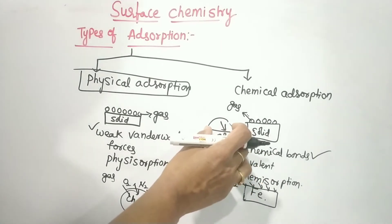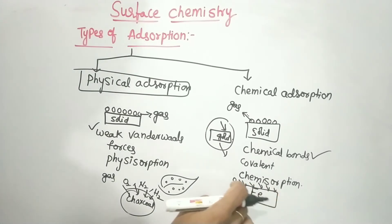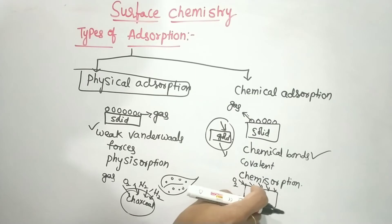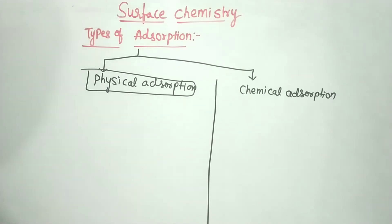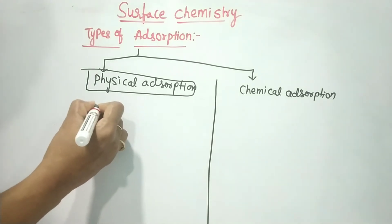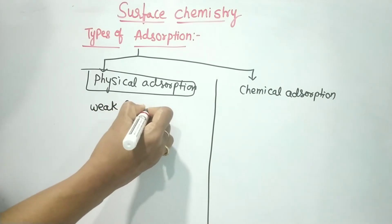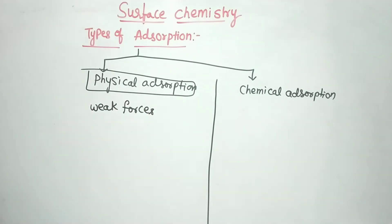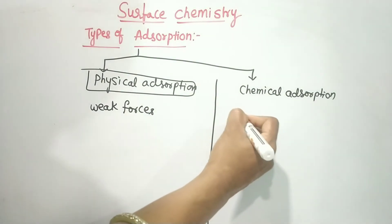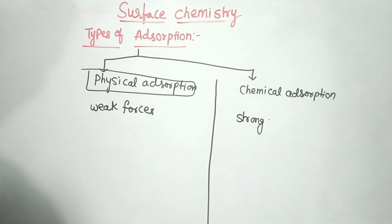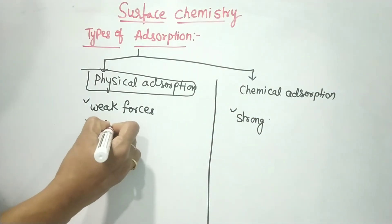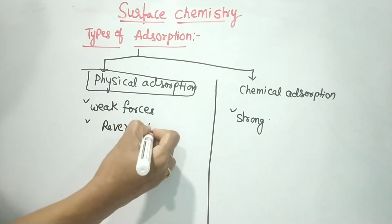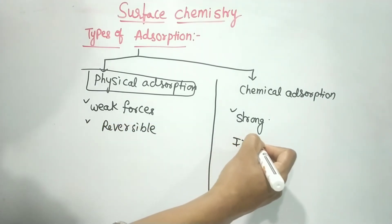In the case of rusting of iron, there is chemical bonding because iron reacts with oxygen. Physical adsorption has weak forces of attraction, while chemical adsorption has strong forces of attraction. This leads to the next difference: physical adsorption is a reversible process, while chemical adsorption is an irreversible process.